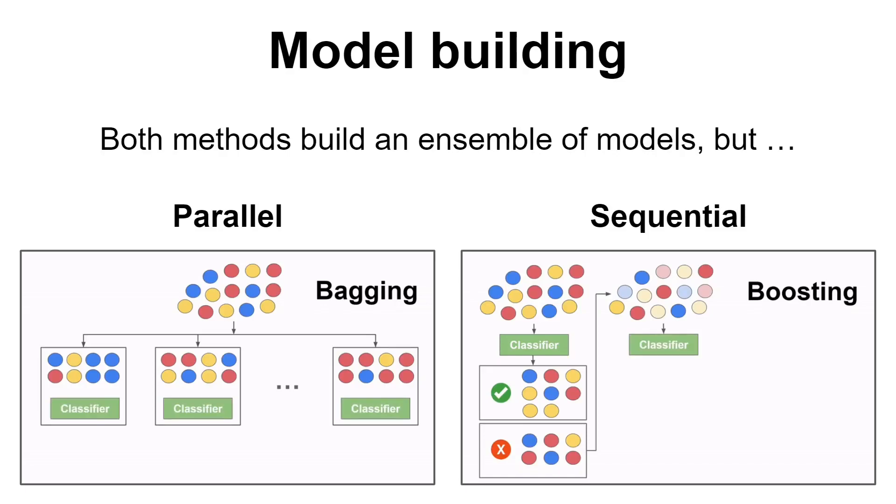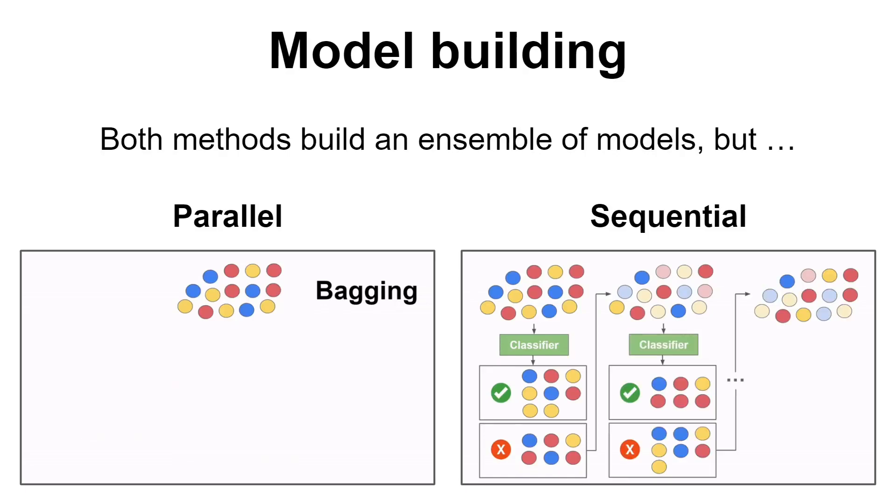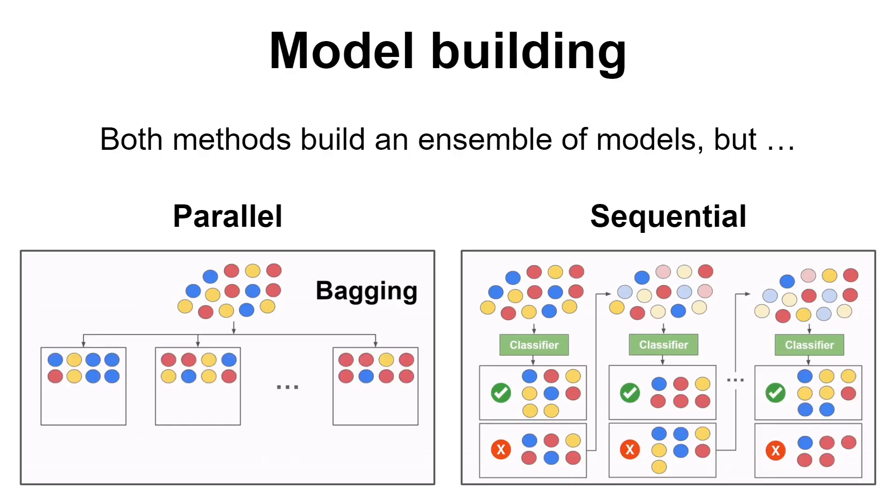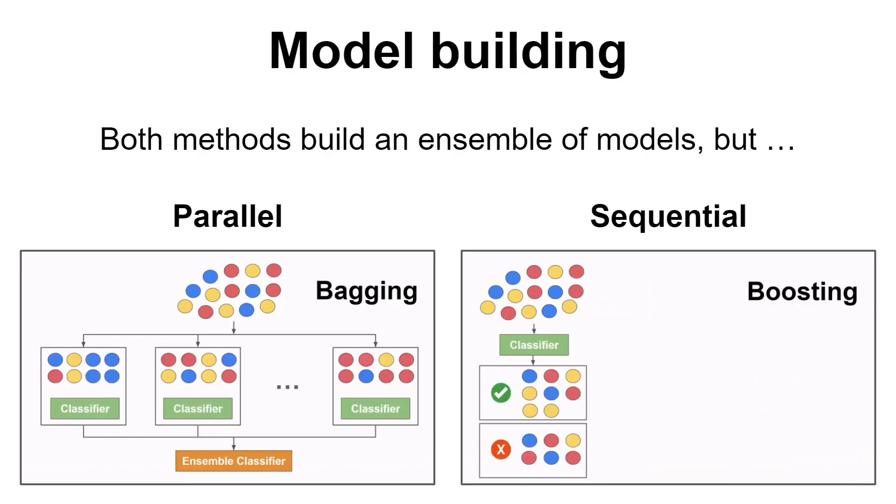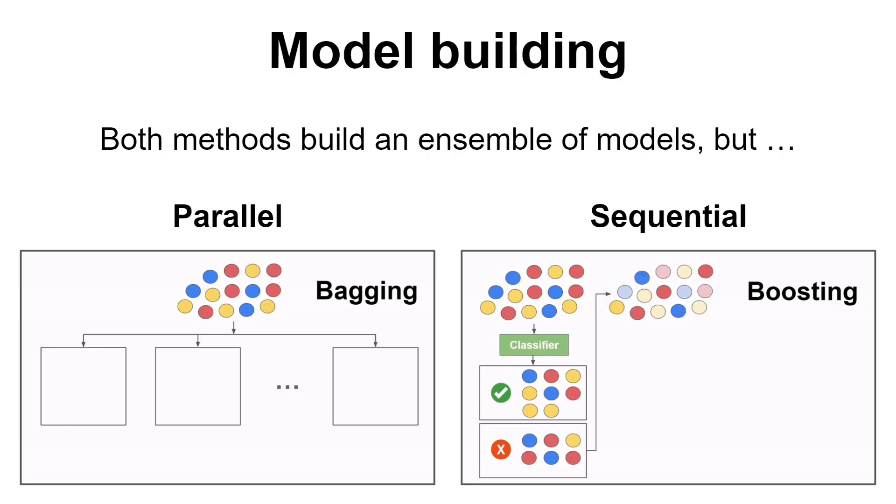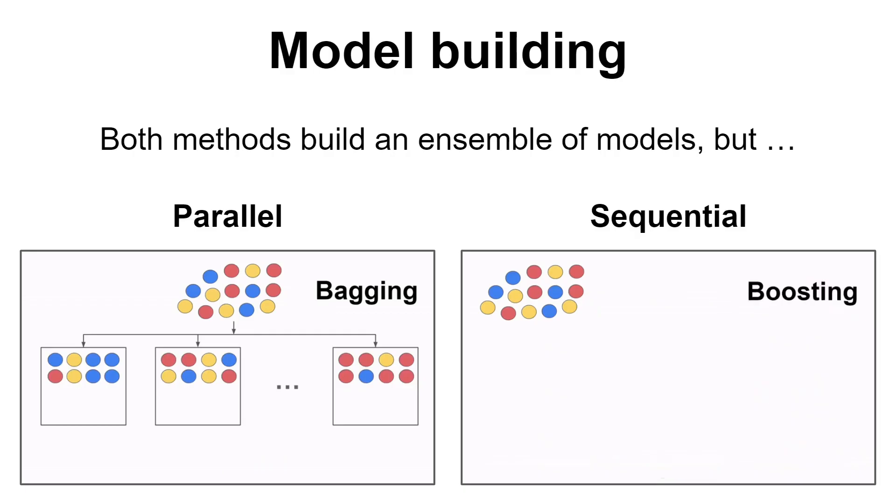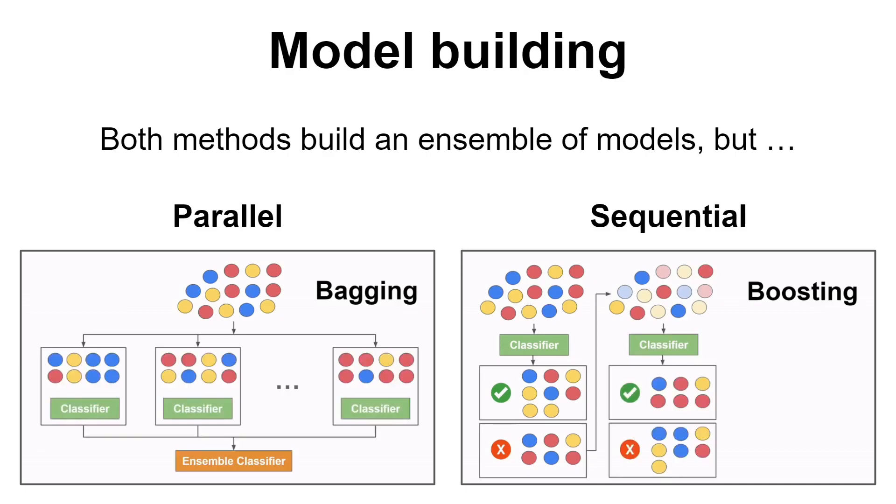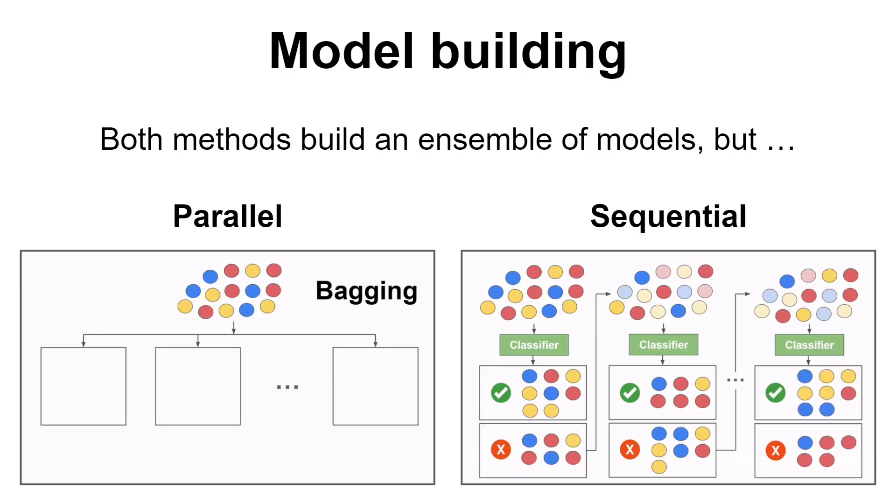Now let's see what are the similarities and the differences between the two by firstly looking at how they work. So at a high level, both methods build an ensemble of models, but bagging builds them in parallel and boosting builds them sequentially. Knowing this may help us in choosing which one to use depending on the computing resources and development time we have at our disposal. If we have a lot of computing, then due to its parallel nature, bagging may be a more suitable algorithm since it may take a lot less time to train the models, while we might get no significant improvement in training for boosting due to its sequential nature.